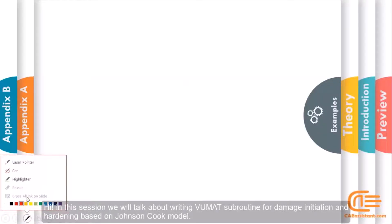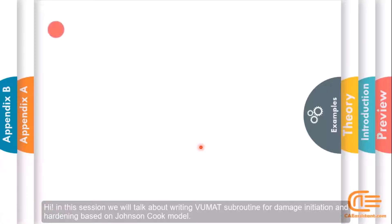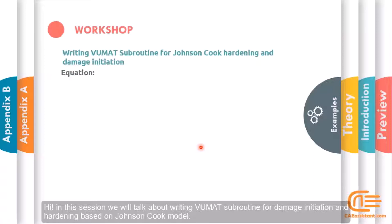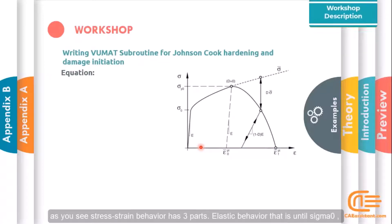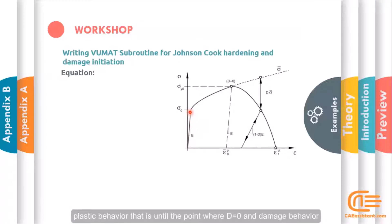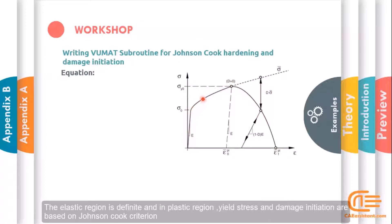In this session we will talk about writing a VUMAT subroutine for damage initiation and hardening based on the Johnson-Cook model. As you see, the stress-strength behavior has three parts: elastic behavior that is until sigma zero, plastic behavior that is until the point where D is equal to zero, and damage behavior. In this example, we will talk about the first two parts.